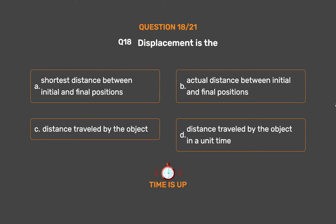The correct answer is Option A: Shortest distance between initial and final positions.